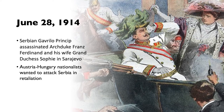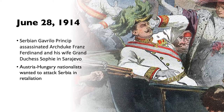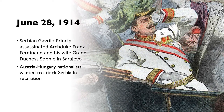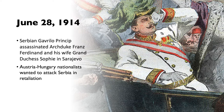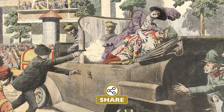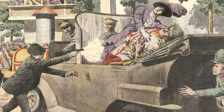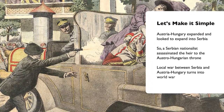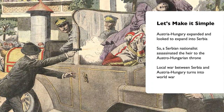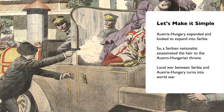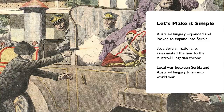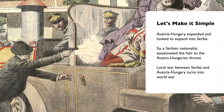On June 28, 1914, a Serbian named Gavrilo Princip assassinated Archduke Franz Ferdinand and his wife, the Grand Duchess Sophie, in Sarajevo, Bosnia and Herzegovina. This would start World War I. Princip did this because of Austria-Hungary's expansion. Austria-Hungary was furious and wanted to attack Serbia in retaliation. The key point is this was just a local war between Serbia and Austria-Hungary — but it would turn into much more.